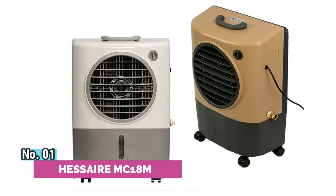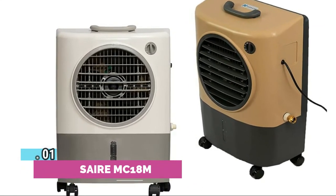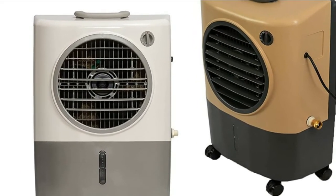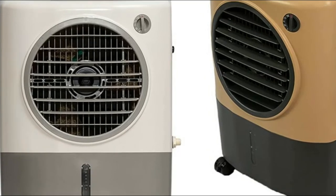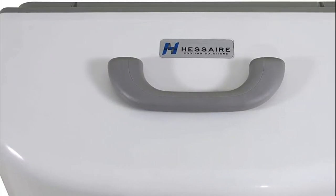Number 1, HESAIR MC18M. With the adjustable features, you can set your preferred relative humidity between 50%-90%. Take control of the unit from the touch panel or remote.